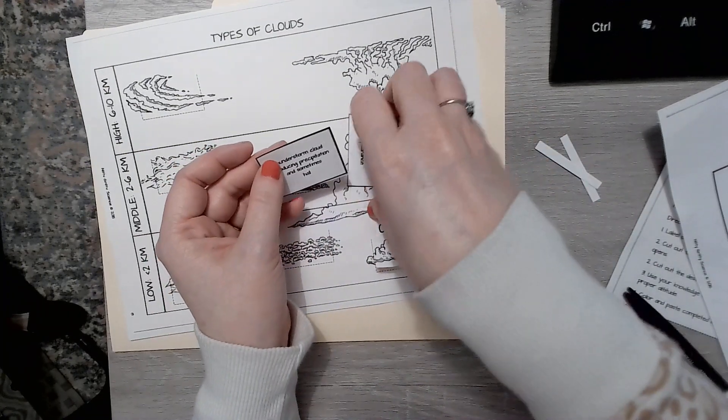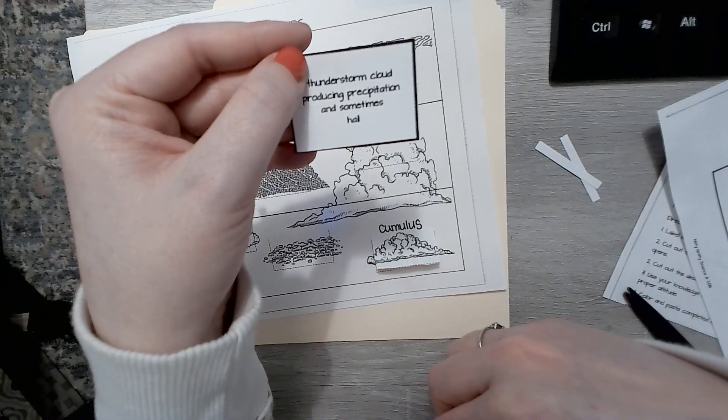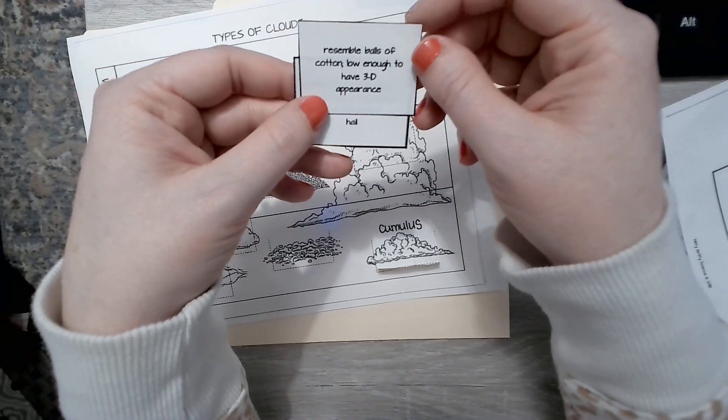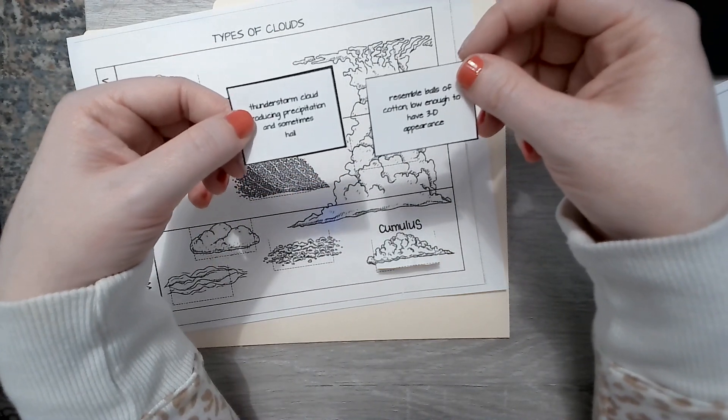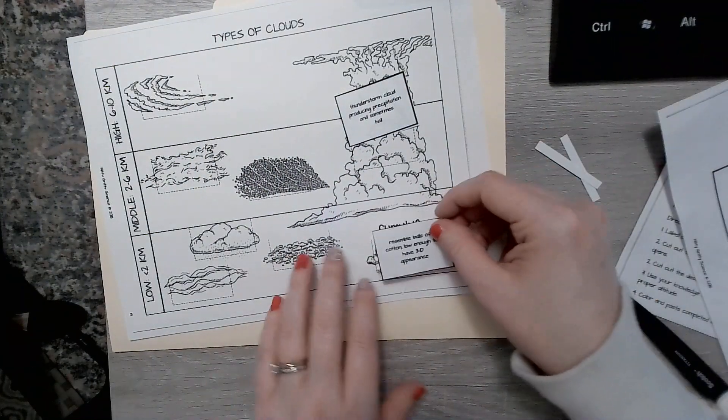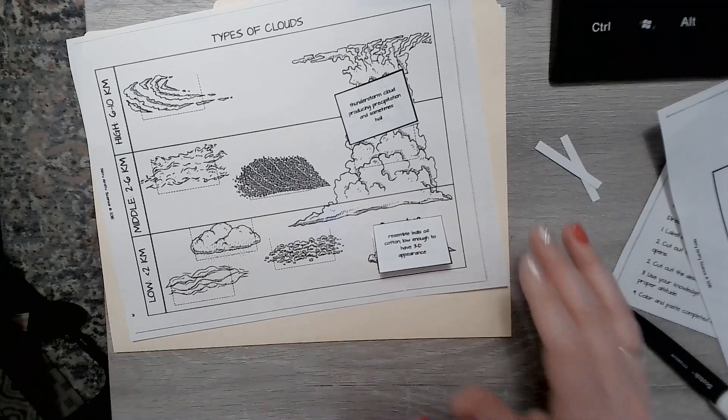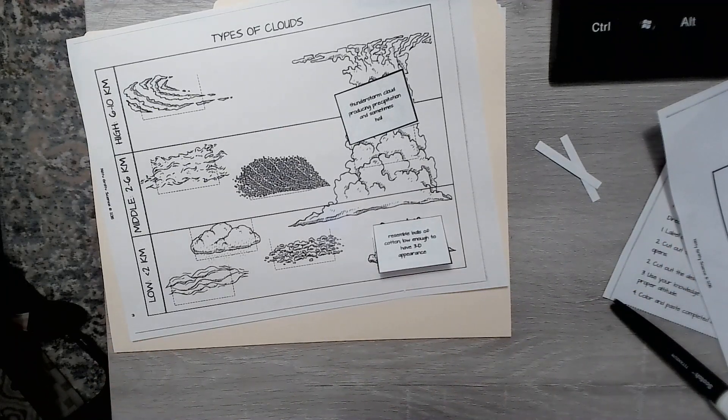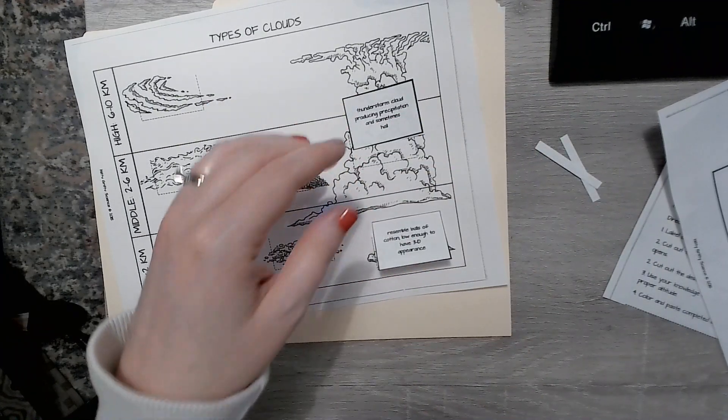So if I were to take these descriptions, so thundercloud that produces precipitation and sometimes hail or resembles balls of cotton low enough to have a 3D appearance, things like that. I would then just place, I think this one goes with that one. And this one goes with this one before I make any final decisions. And if you're doing this in class, please come and ask your teacher. We would be happy to kind of help say, maybe not sort of a thing, but these aren't correct, by the way.